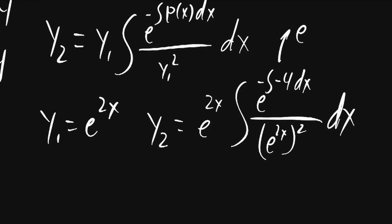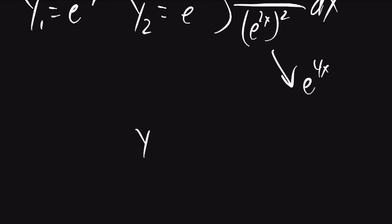The numerator will evaluate to e to the 4x, and the denominator will also evaluate to e to the 4x. So I'll rewrite this. y2 will be equal to e to the 2x times the integral of e to the 4x over e to the 4x dx.